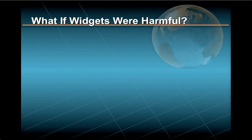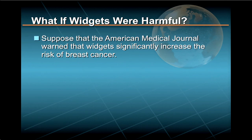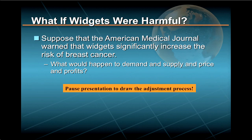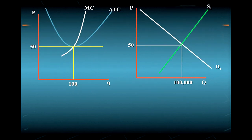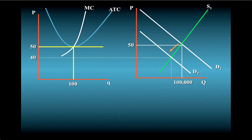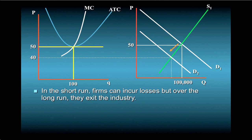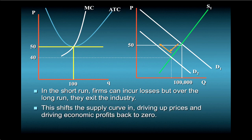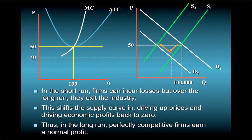Think of the process in reverse. Suppose that instead of extolling the virtues of widgets as a cure for Alzheimer's, the American Medical Journal had warned that widgets significantly increased the risk of breast cancer. Demand shifts in, price goes down, and so do profits. In the short run, firms can incur losses, but over the long run, they exit the industry. This shifts the supply curve in, driving up price and driving economic profits back to zero. Thus, in the long run, perfectly competitive firms earn a normal profit, no more and no less.